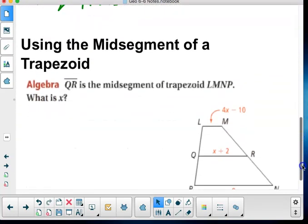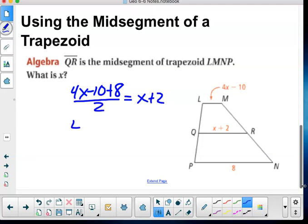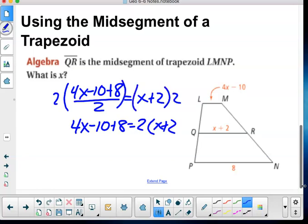So QR is the mid-segment of trapezoid LMNP. What is X? So here's the deal. I know if I take 4X minus 10 plus 8 and divide it by 2, I get X plus 2. I could also, because that's the average of my two bases, take 4X minus 10 plus 8 equals 2 times X plus 2, because if I multiply by 2 on both sides, I know that's the same relationship.